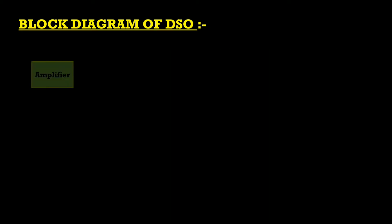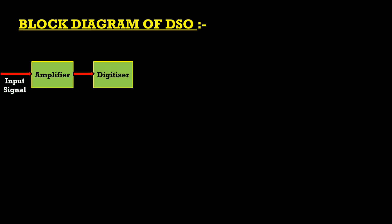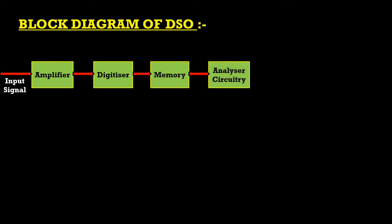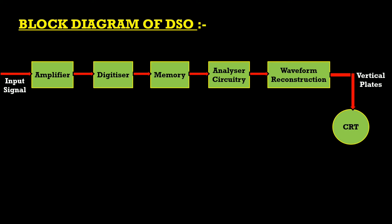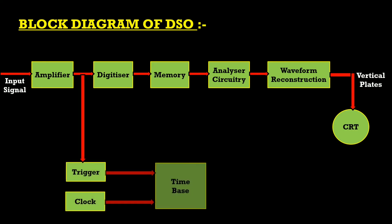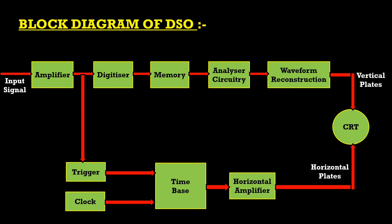In the block diagram, the input signal is first given to the amplifier, then proceeds to the digitizer, then to memory, then to the analyzer circuitry, and then to the waveform reconstruction block. From there, the signal is displayed on the CRT via the vertical plates. The trigger and clock signal is given to the time-base circuitry, and via the horizontal amplifier, the horizontal plates drive the CRT display.